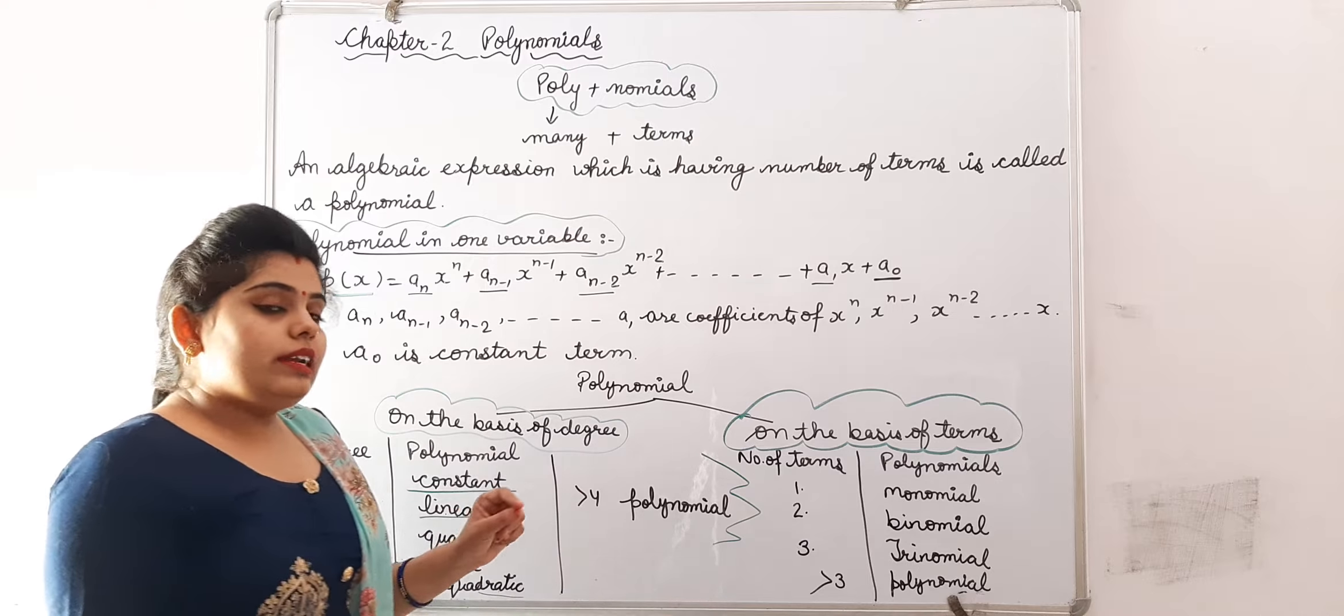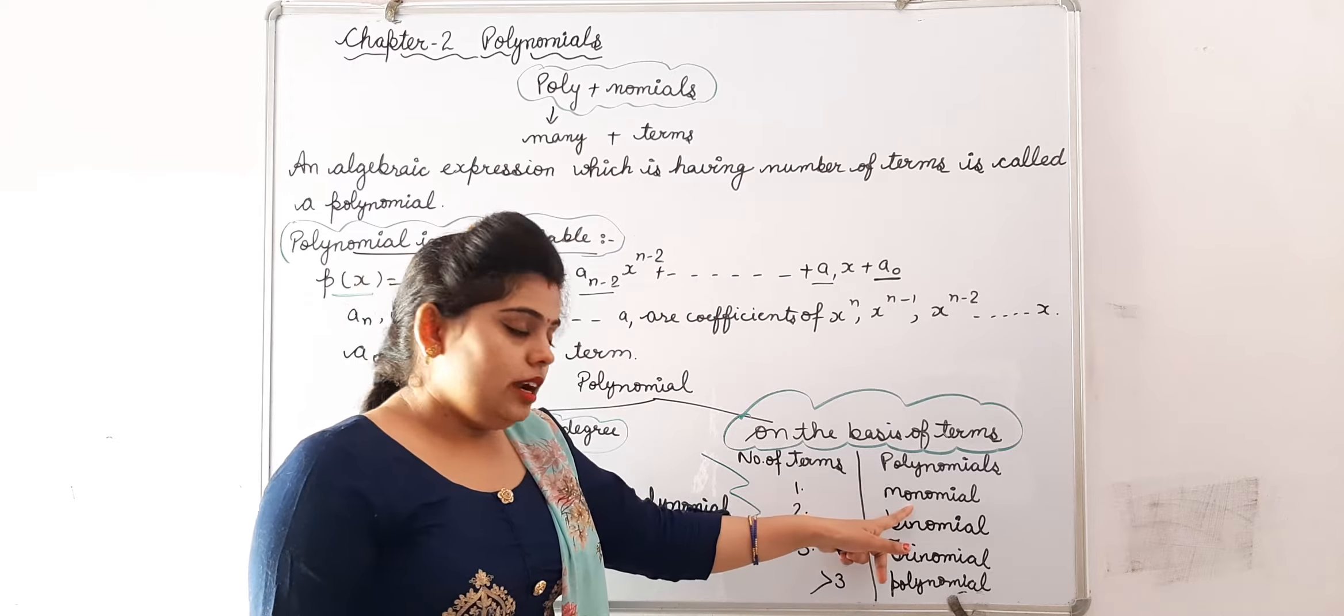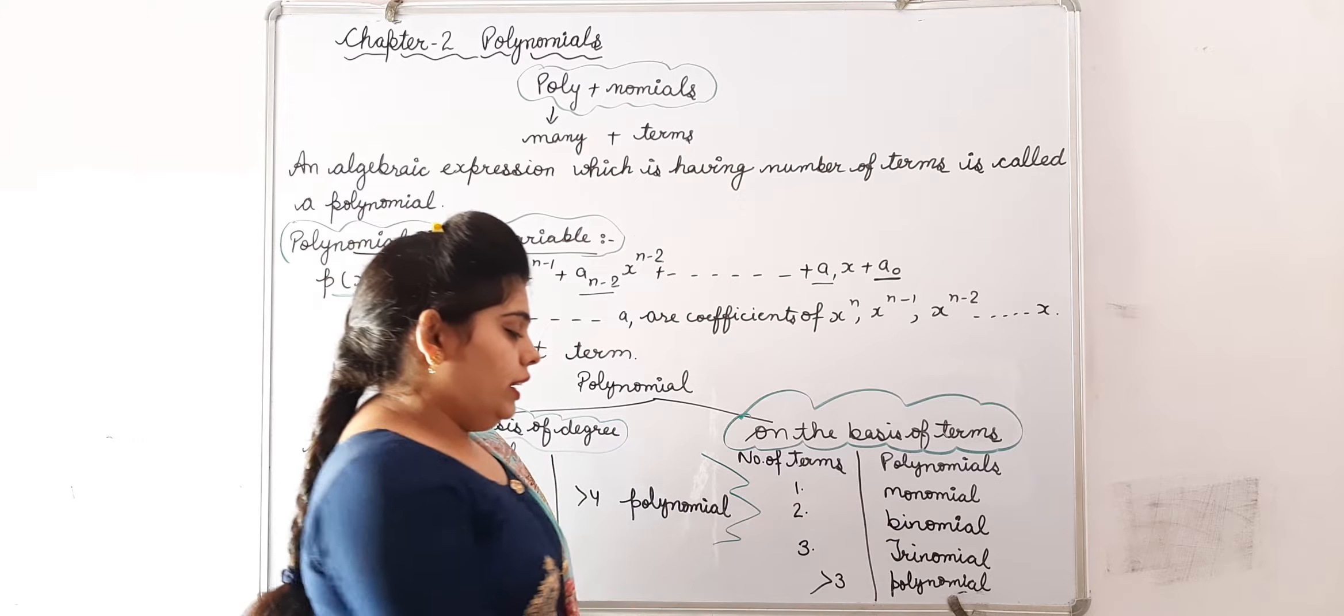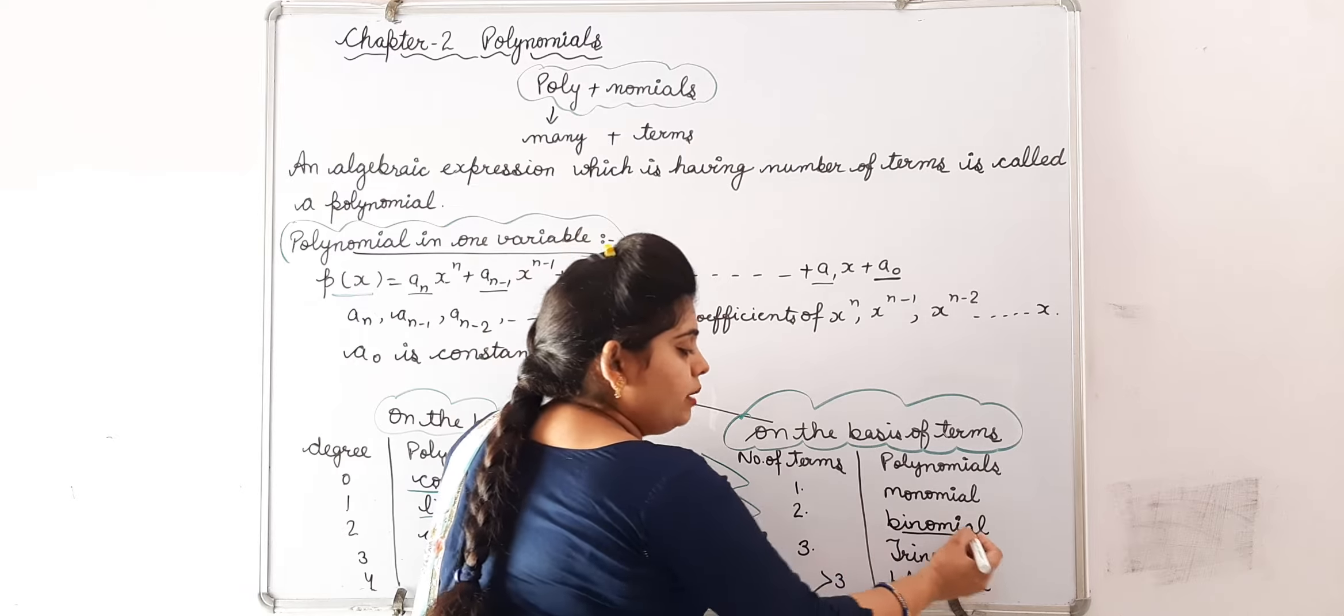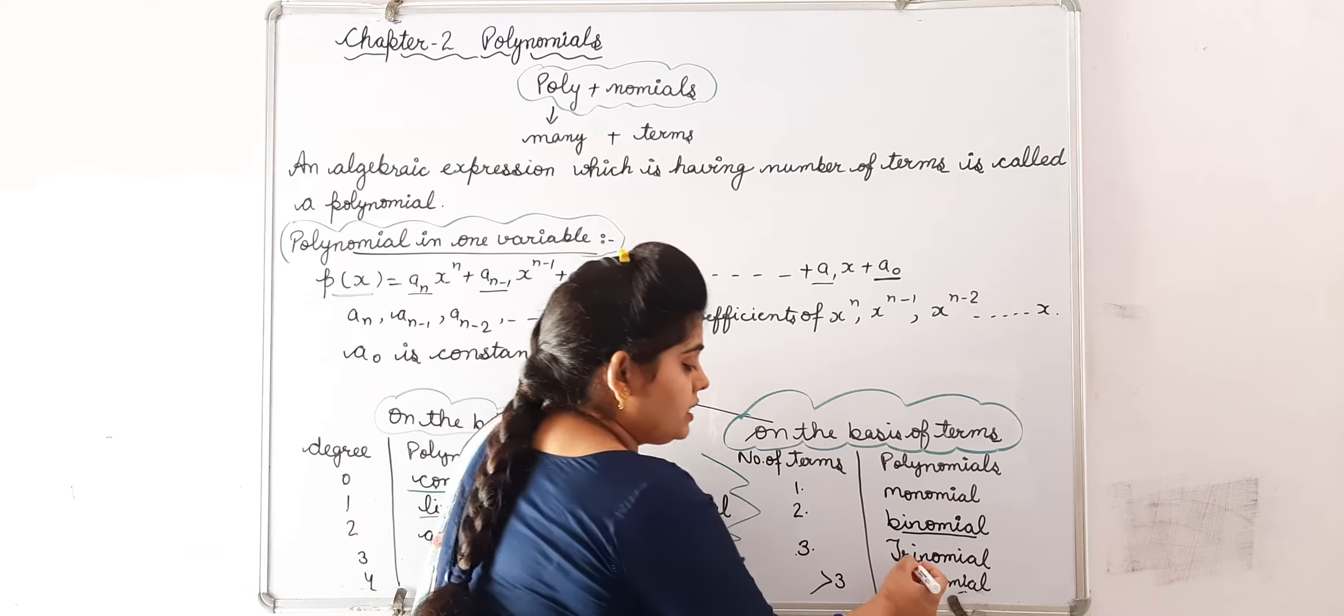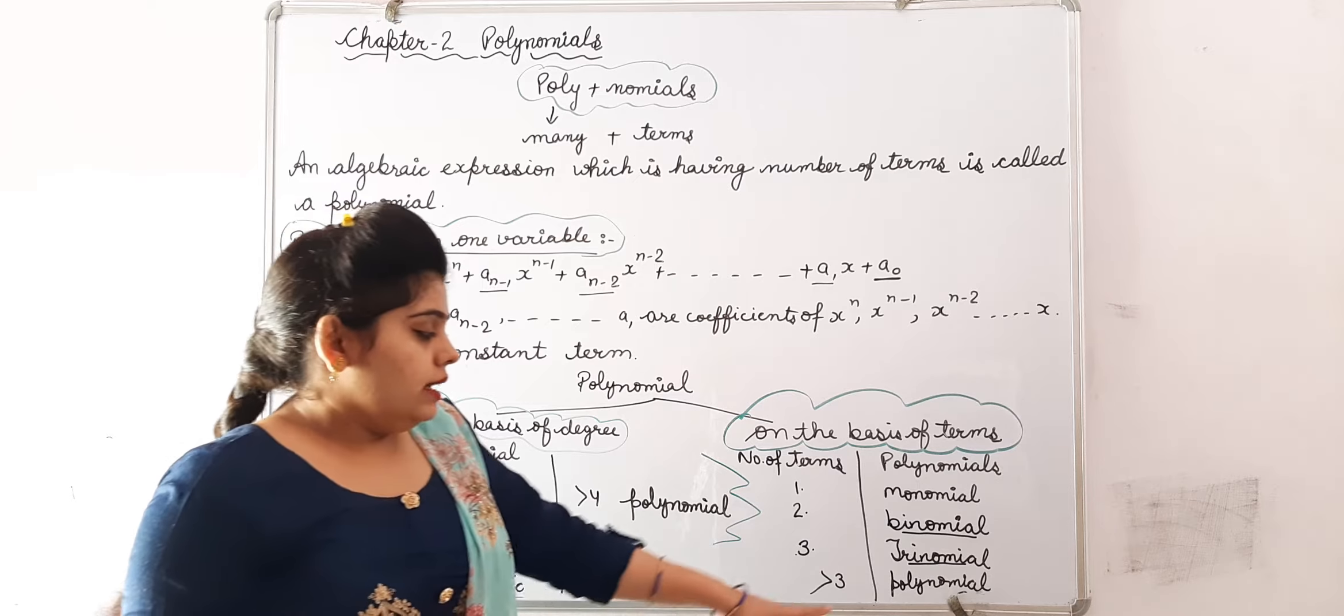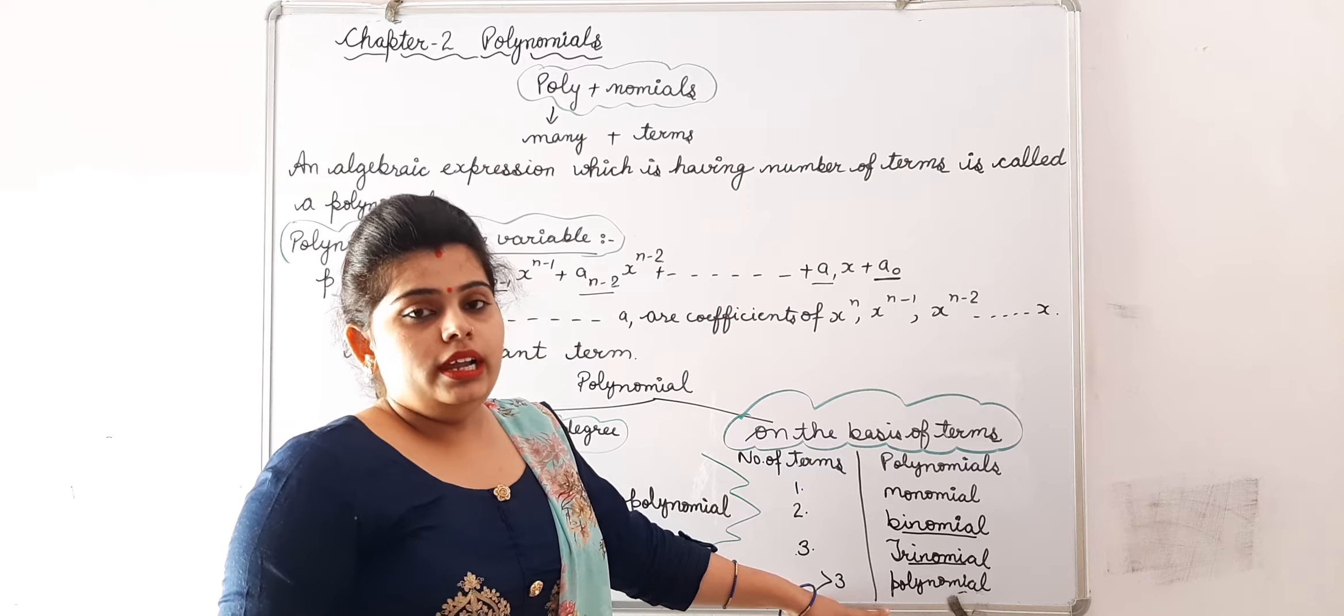Now we will classify on the basis of terms. If number of terms is 1, then it is called monomial. If number of terms is 2, then it is called binomial. If number of terms is 3, then it is called trinomial. And if number of terms are greater than 3, then it is called polynomial.